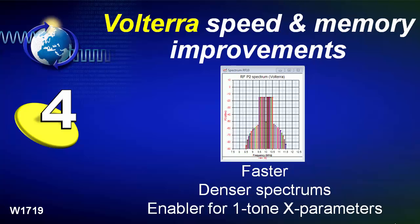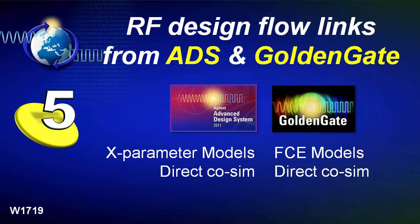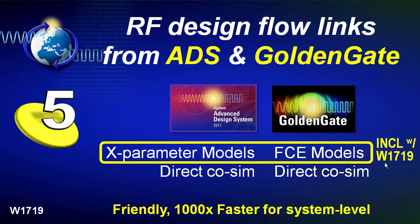The fact that we were using X-parameters leads to the fifth new feature: Spectrasys as an RF architecture tool now has direct design links to RF design flows — to ADS and to GoldenGate. ADS can export an X-parameter model, or in GoldenGate you can export a fast circuit envelope model. These models are enabled with the W1719 RF System Design Kit license and offer over a thousand times faster simulation performance over direct co-simulation, because they run natively within the SystemVue environment.